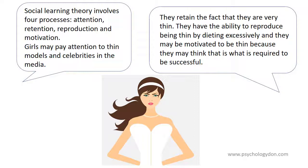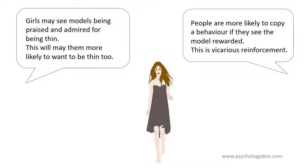Girls may pay attention to thin models and celebrities in the media. They retain the fact that they are very thin. They have the ability to reproduce being thin by dieting excessively, and they may be motivated to be thin because they think that is what is required to be successful. Girls may see models being praised and admired for being thin, which will make them more likely to want to be thin too. People are more likely to copy a behaviour if they see the model rewarded — this is called vicarious reinforcement.